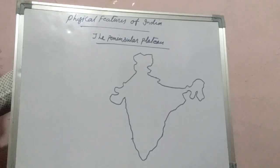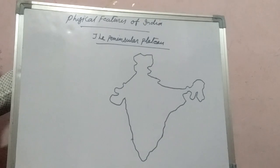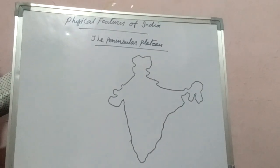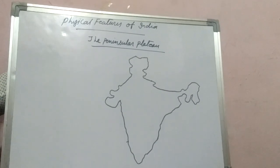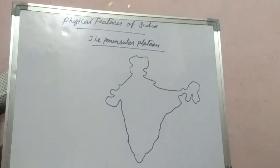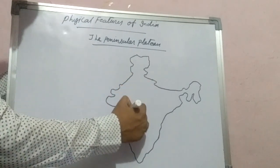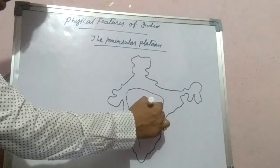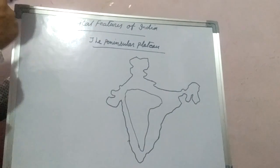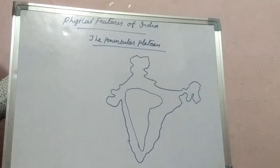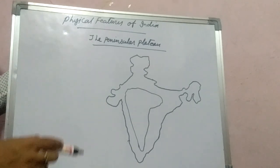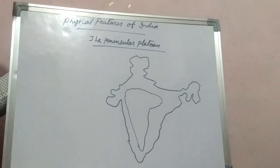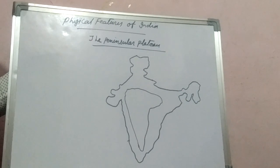Students, today our topic is from the lesson Physical Features of India. Our topic is Peninsular Plateau. This region is known as Peninsular Plateau, and we will see very clearly that it is in the southern part of India. It is also known as Deccan Plateau — Deccan was termed from a very ancient time in India.